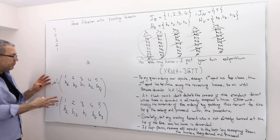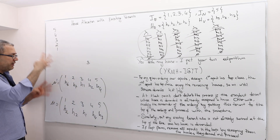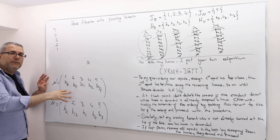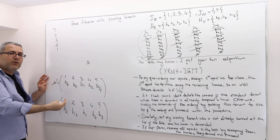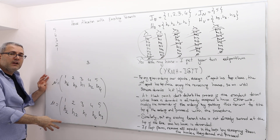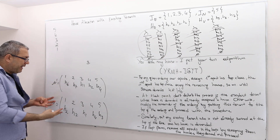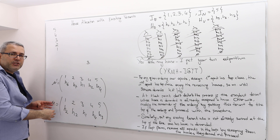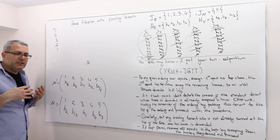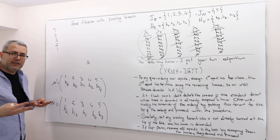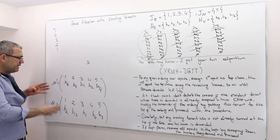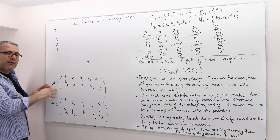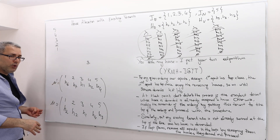Because we reshuffled the ranking of agents, some agents are better off and some are worse off. This makes the two matchings incomparable in terms of Pareto-optimality — Mu does not Pareto-dominate Mu prime, and Mu prime does not dominate Mu.